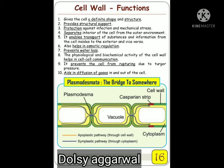Now let's look at the functions of the cell wall. It gives a definite shape and structure to the cell. It provides strength and support to the cell and the plant. It is protective against any kind of infection and mechanical stress. It separates the interior of the cell from the outer surface. It enables the transport of substances and information from inside the cell to the exterior and vice versa — ensuring the exchange of materials in and out of the cell. It also helps in osmotic regulation, maintaining concentration and pressure. It prevents water loss and reduces the rate of transpiration. The cell wall also aids in physiological and biochemical activity, and it helps in cell-to-cell communication — joining two cells together.